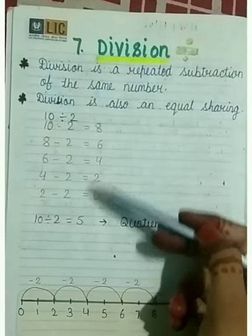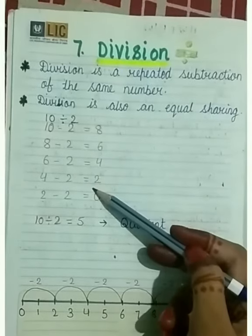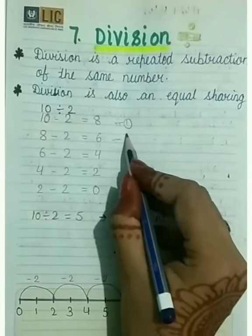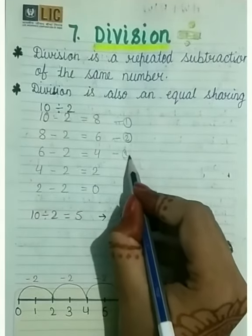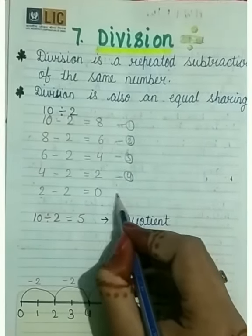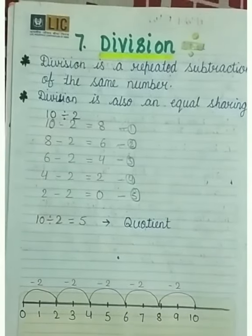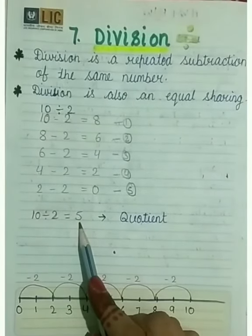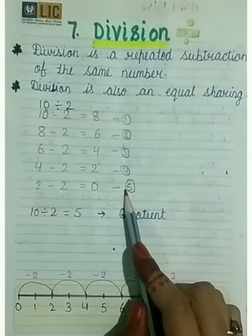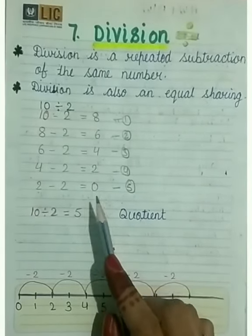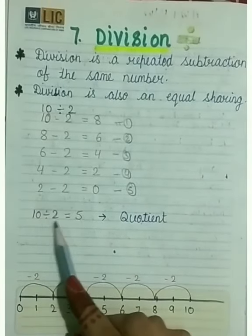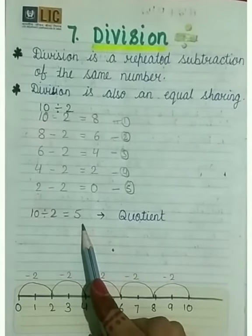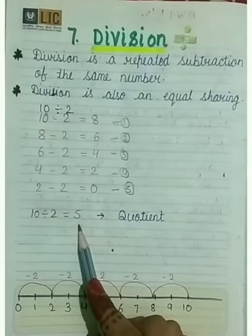See the example, how many times I have subtracted 2. 1, 2 times, 3, 4, and 5. Here 2 is subtracted 5 times. 2 is subtracted 5 times to make it 0. That means 10 divided by 2 equals 5. The result is known as quotient.